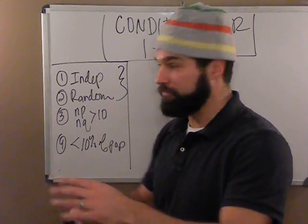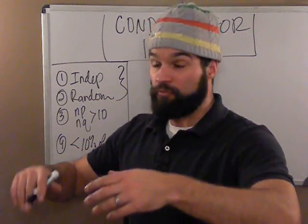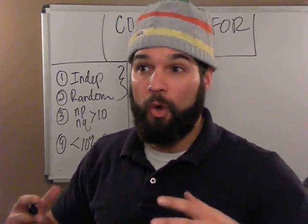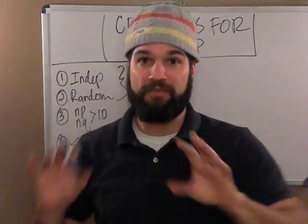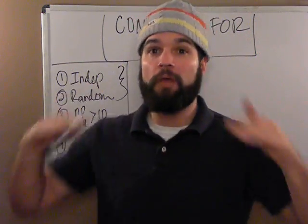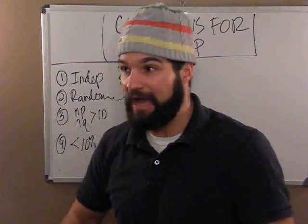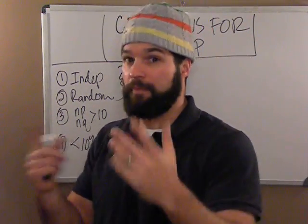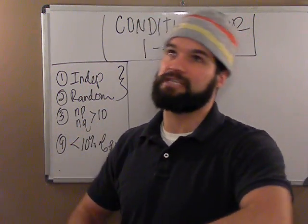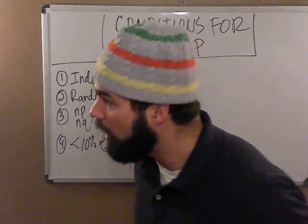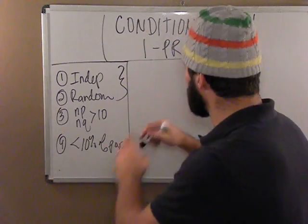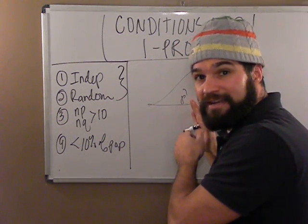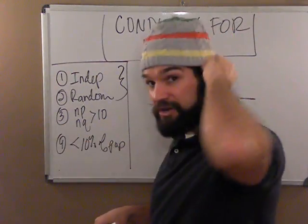Why do we need randomness? Partly because of independence, but also because randomness is what we know about. Everything we studied in probability was about randomness — we know how p-hats fall randomly, but not how they fall non-randomly. Our normal model is based on random samples of size n. Since we need to find the likelihood of getting a particular p-hat randomly, we'd better make sure that p-hat was gathered randomly.